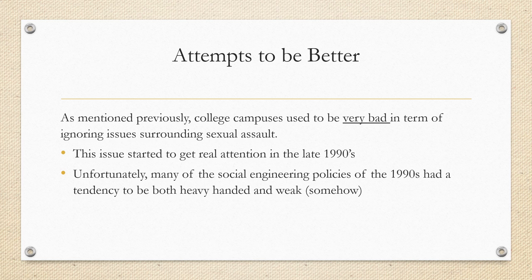Unfortunately, many of the social engineering policies of the 1990s had a tendency to be both heavy-handed and somehow weak. You really see this in the 90s with a lot of what we now call social justice issues — things surrounding sexuality, things surrounding race and ethnicity, etc. People were trying to be better, but a lot of those attempts to be better really fell short in a lot of ways.